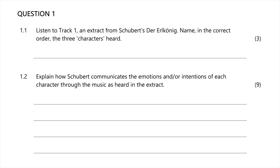Question 1.1 asks you to listen to track one, which is an excerpt from Schubert's the Erlkönig. Name in the correct order the three characters heard. Once you've listened to this track you should hear that it is first the son, then the father, and then the Elf King or the Erlkönig.